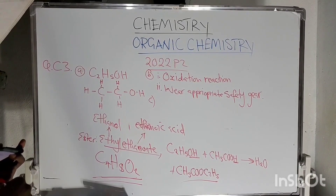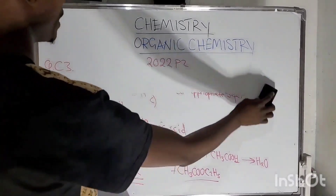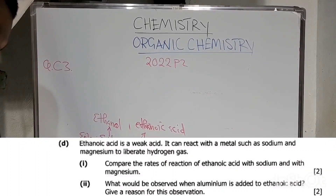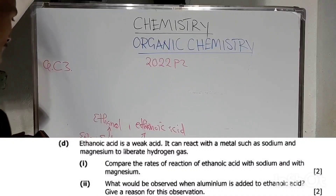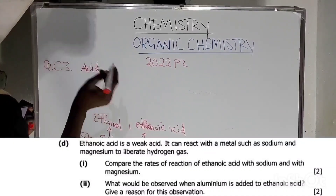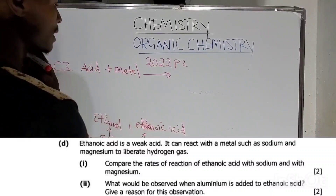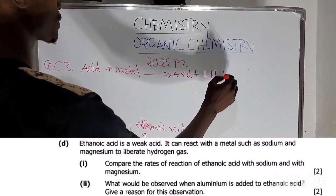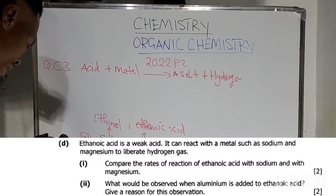Question D1: Compare the rate of reaction of ethanoic acid — which is a weak acid — with sodium and with magnesium. An acid reacting with a metal produces a salt and hydrogen gas. So we compare how vigorously ethanoic acid reacts with sodium versus magnesium.